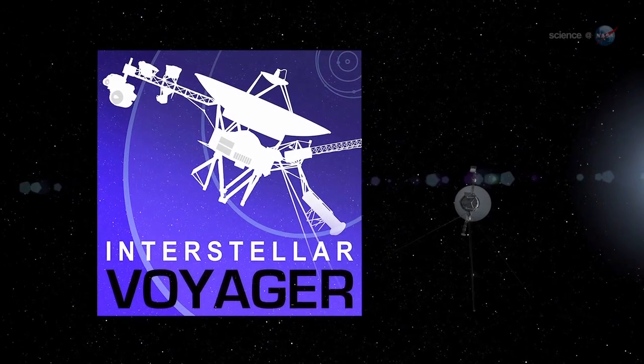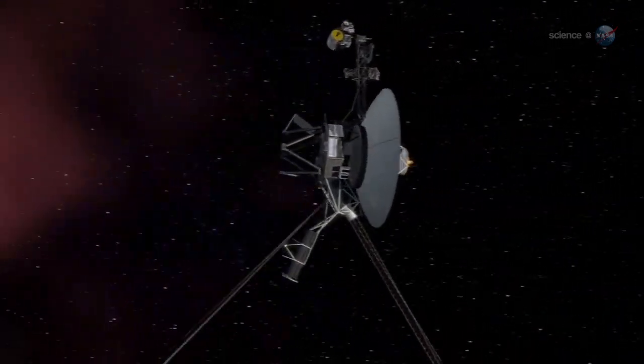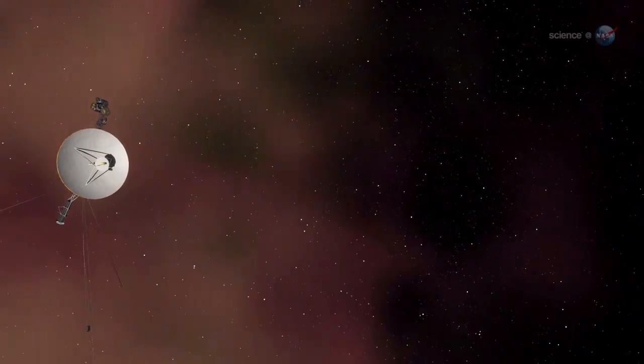When NASA sent the Voyager probes to find the edge of the Sun's magnetic field, it took them nearly 40 years to get there. Turns out, that's nothing.